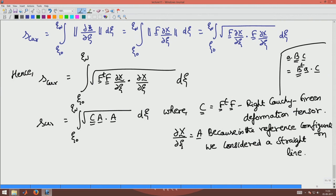So this is the current arc length of the curve in the current configuration. So we are interested in the stretch ratio lambda along the direction A, which is S current by S reference, which will be integral X_0 to X_n square root of C·A dotted with A dX divided by integral X_0 to X_n A dot with A dX.